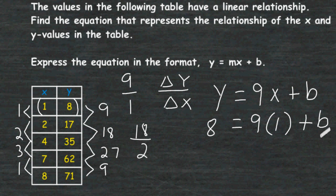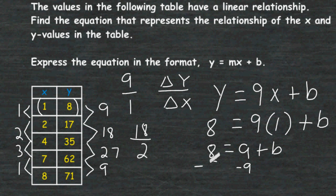We now have enough information to determine the b value. We simplify: 9 times 1 is 9. To isolate b, we subtract 9 from both sides. 8 take away 9 is equal to negative 1, so b equals negative 1.